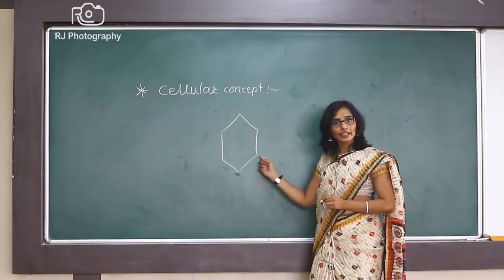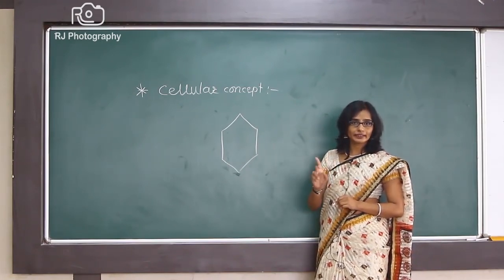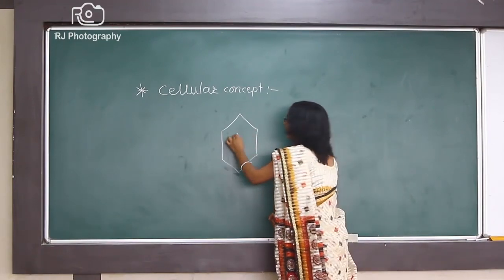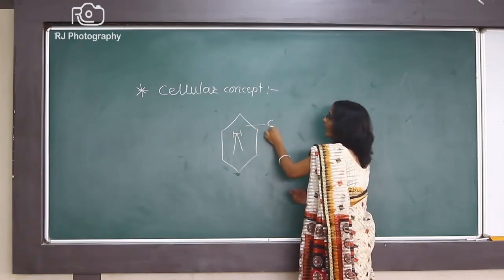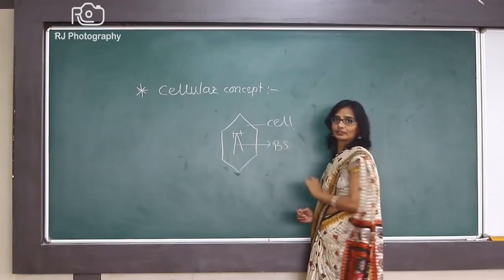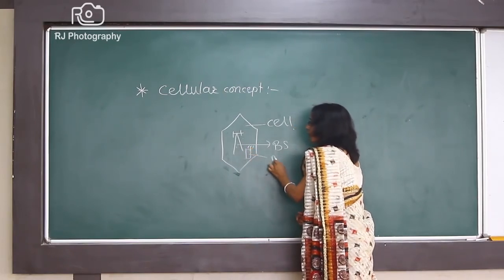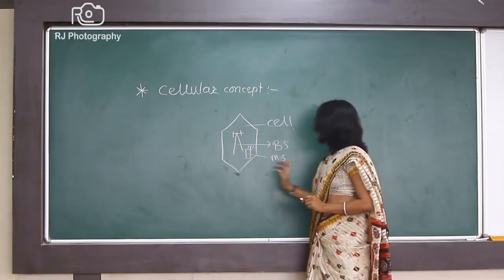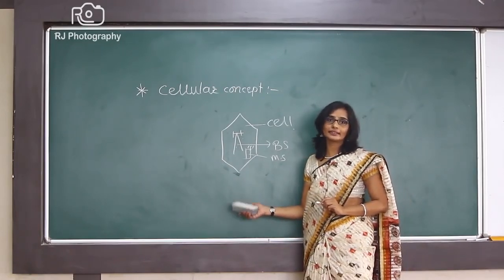To cover this hexagonal area and all the users, it is necessary that the base station, which has an omnidirectional antenna for propagation, should be located in the center of this area as shown in the diagram. We can call this area a cell, where the area shown by this tower we can call the base station. This base station is going to cover the users in the form of MS, that is the mobile station. This is about why we take the area in a hexagonal shape and why we call our mobile phone a cell phone.